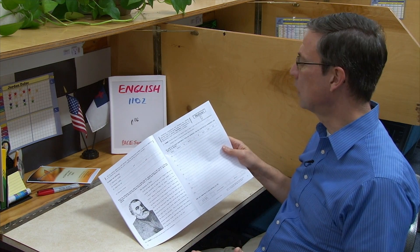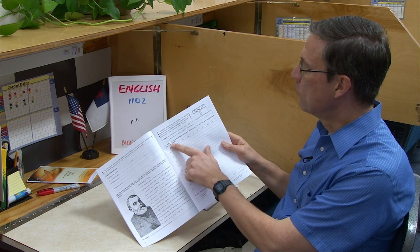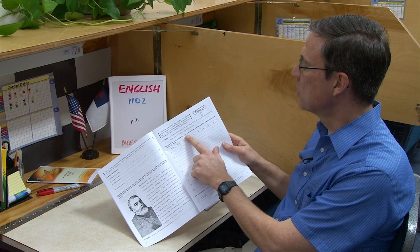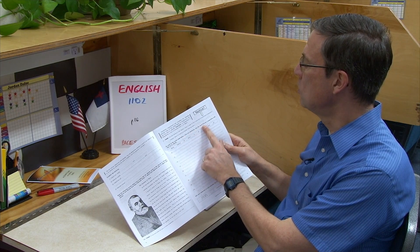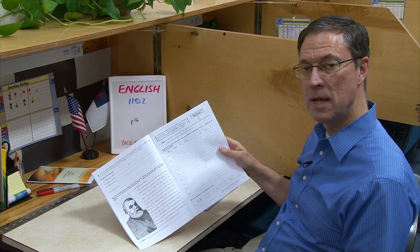So then we're supposed to come up with sentences for each word listed below. We're supposed to write two sentences: one using it as a preposition and then using that same word as an adverb.